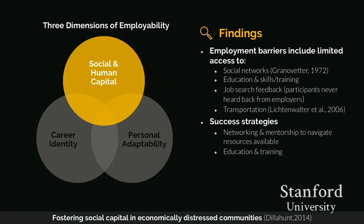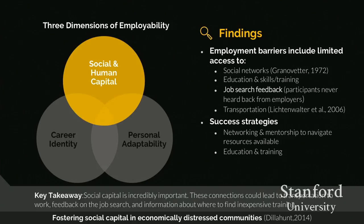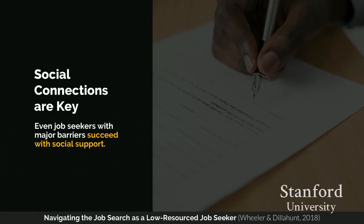Success strategies included networking and mentorship to navigate available resources, as well as obtaining education and training for jobs. Participants lacked career identity and personal adaptability but were all aware of the benefits of social and human capital. The key takeaway: social capital is incredibly important — strong social networks can lead to transportation to work, job search feedback, and information about inexpensive training. To stress this point, I'd like to give an example from a recent interview conducted by one of my PhD students.